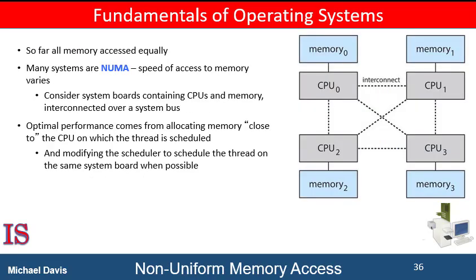So far in our coverage of virtual memory, we have assumed that all main memory is created equal, or at least that it's accessed equally. On non-uniform memory access systems — NUMA systems — with multiple CPUs, that's not the case. On these systems, a given CPU can access some sections of memory faster than it can access others. These performance differences are caused by how CPUs and memory are interconnected in the system.